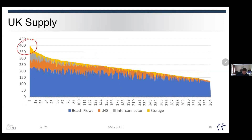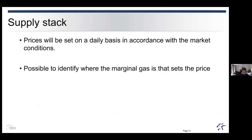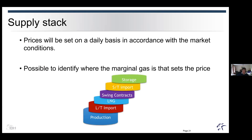From this we can identify what we call a supply stack. The prices seen across the UK market and European markets allow us to see where flows are going to come from according to market conditions, and from that we can identify where the marginal gas price is set. The marginal gas price is what we have to pay to gain additional flows. Looking at the supply stack, we have baseload production and long-term imports at the bottom, LNG, swing contracts from the North Sea or Norway that can ramp up and down, short-term imports, and storage.